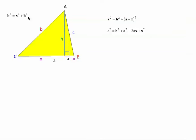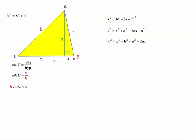We know that B squared is X squared plus H squared. Here's my H squared and here's my X squared — putting them together, C squared equals X squared plus H squared plus A squared minus 2AX, and we can replace X squared plus H squared with B squared. For the X, I notice that cosine of C is adjacent over hypotenuse, which is X over B, so B times cosine of C equals X. I replace this X with B cos of C, and X squared plus H squared with B squared. So C squared equals B squared plus A squared minus 2A times B cos of C. Reorganizing, putting A before B, gives C squared equals A squared plus B squared minus 2AB cos of C.